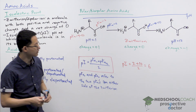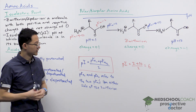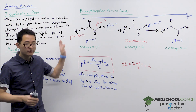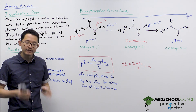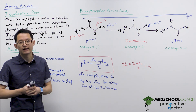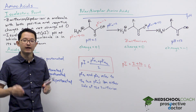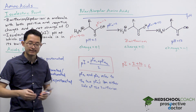This is how you determine the isoelectric point of polar and nonpolar amino acids. In the next video, we're going to look at calculating the isoelectric point for acidic and basic amino acids.